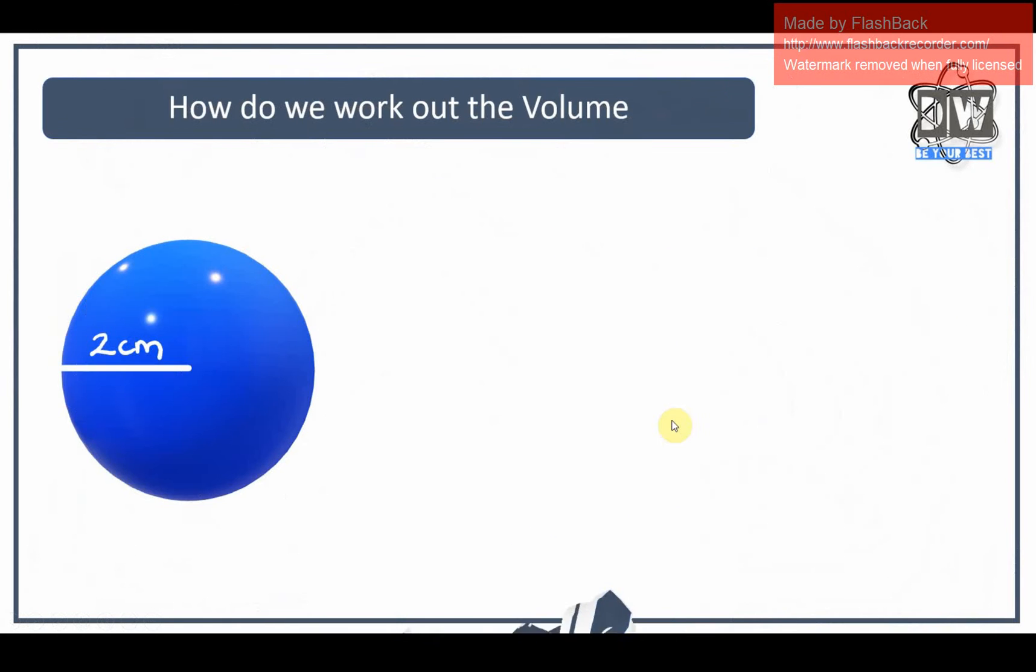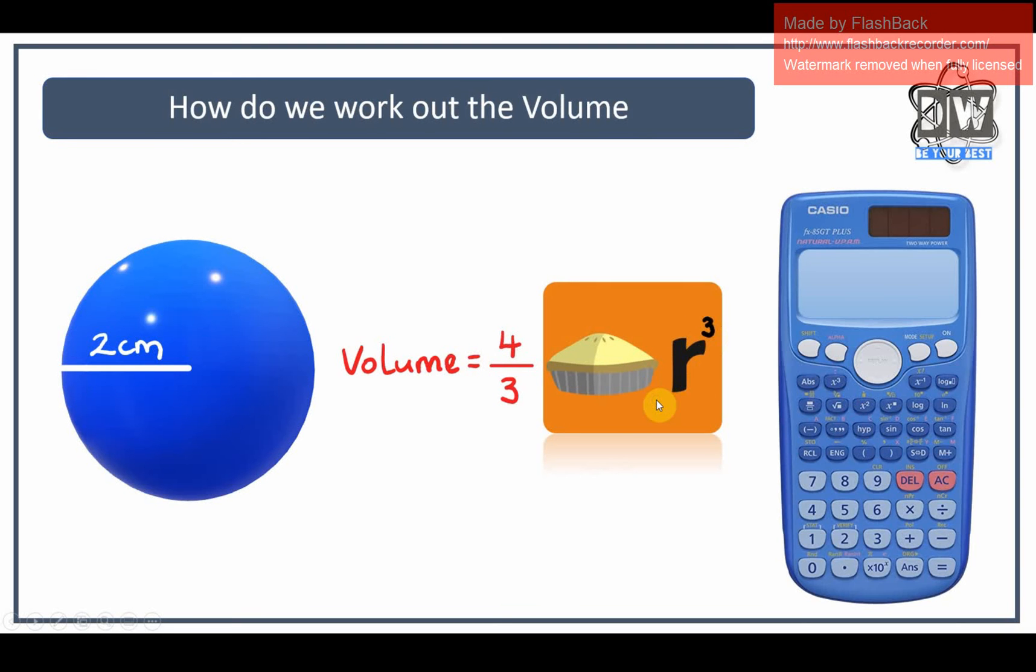So here we go, this is how we work out the volume of a sphere. The big key here is the formula: the volume of a sphere equals four thirds of pi times r cubed. So we're definitely going to need to use our calculator.